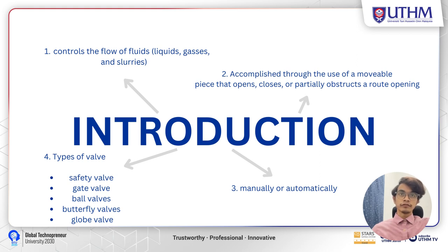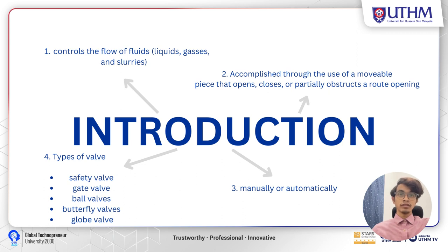For introduction, what is a valve? A valve is a device that controls the flow of fluid, which is liquid, gases and slurry in a pipe or other enclosure. The control is accomplished through the use of a movable piece that opens, closes or partially obstructs a routing opening. In this report, we only discuss selected valves: the safety valve, the gate valve, the ball valve, the butterfly valve, and the globe valve.